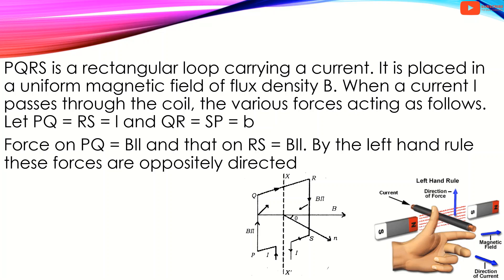PQRS is a rectangular loop carrying a current. It is placed in a uniform magnetic field of flux density B. When a current I passes through the coil, the various forces act as follows. Let PQ equal to RS equal to L, and QR equal to SP equal to B. The force on PQ is equal to BIL, and that on RS is equal to BIL. By the left-hand rule, these forces are oppositely directed.